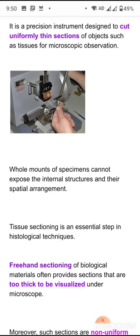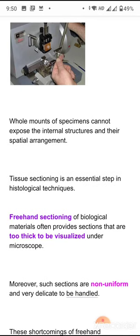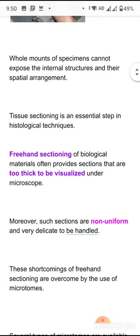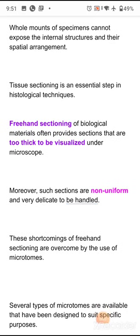Tissue sectioning is very important in histological techniques. When we study the histology of a tissue, sectioning is essential because without extremely thin sections we won't be able to study the histology or histochemistry of a tissue. Freehand sectioning of biological materials often provides sections that are too thick to be visualized, and moreover the sections will be non-uniform and very delicate to handle.